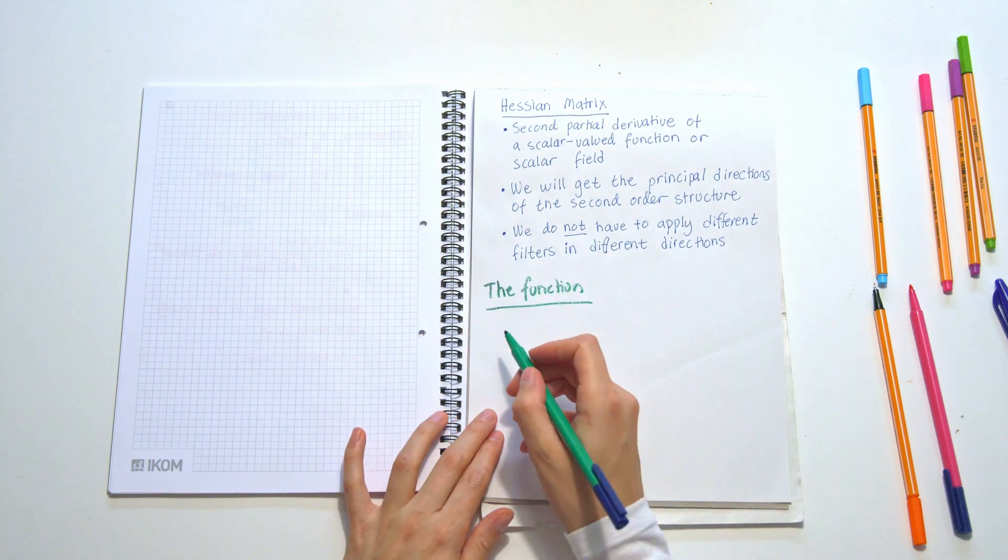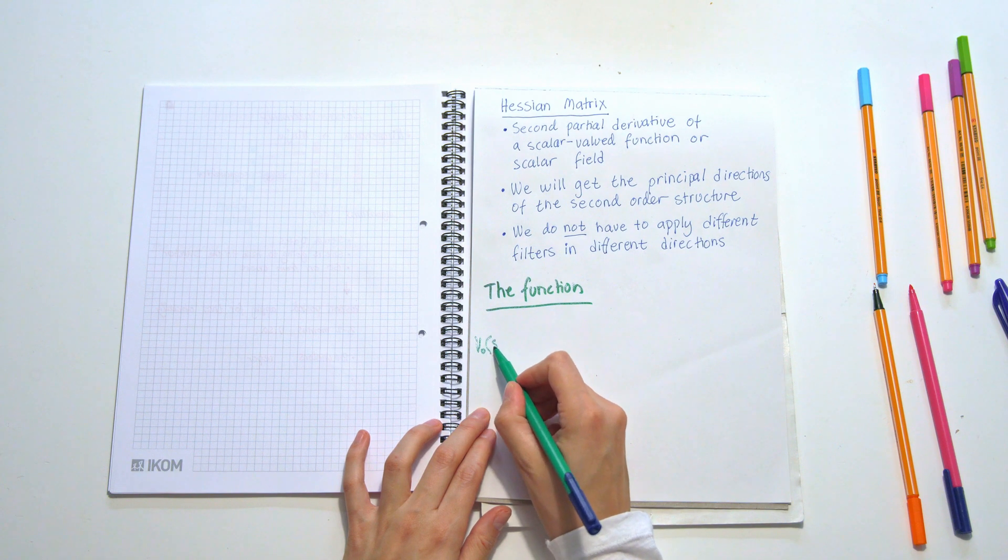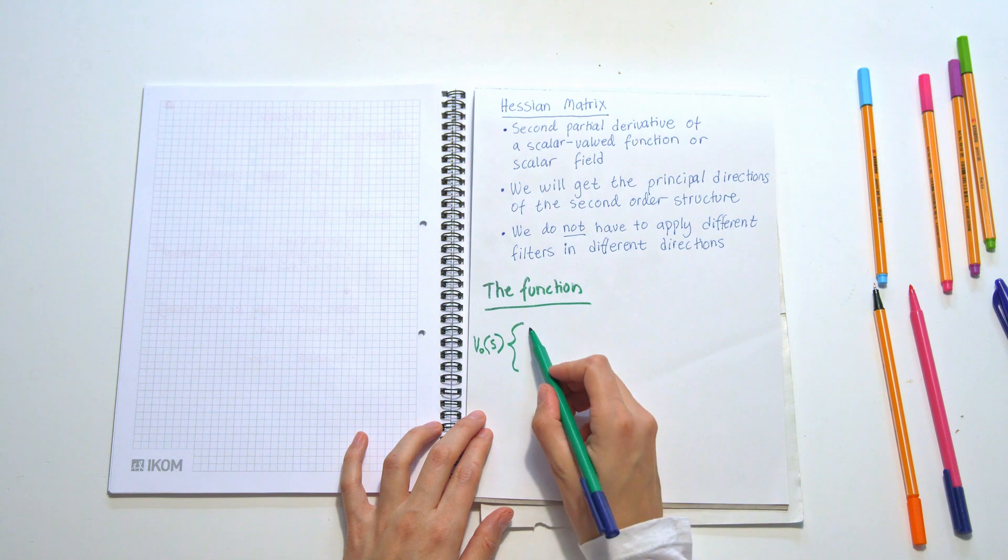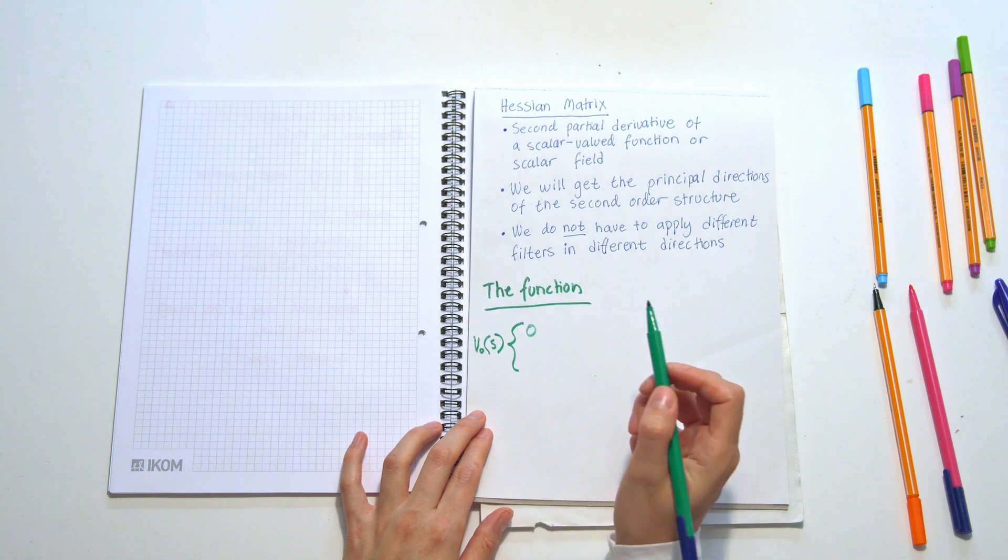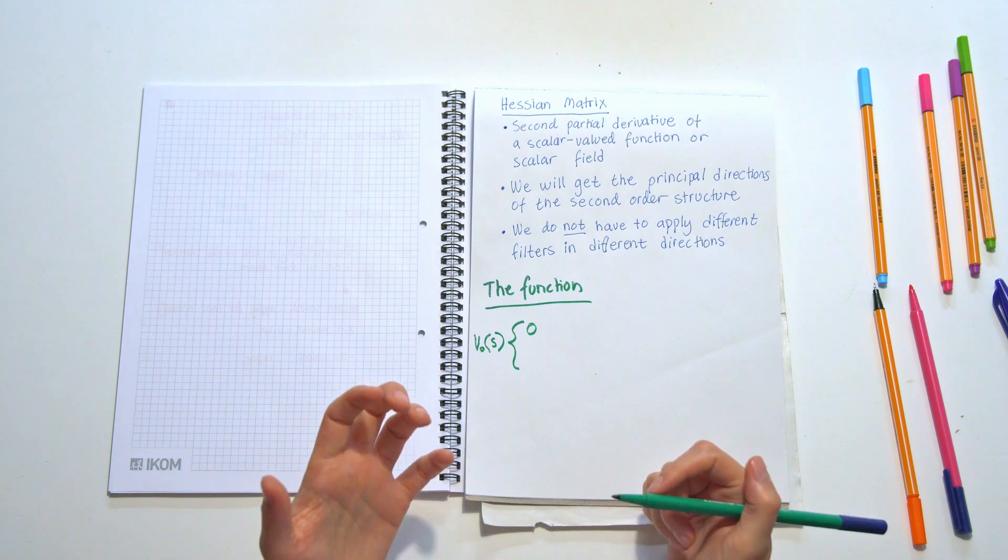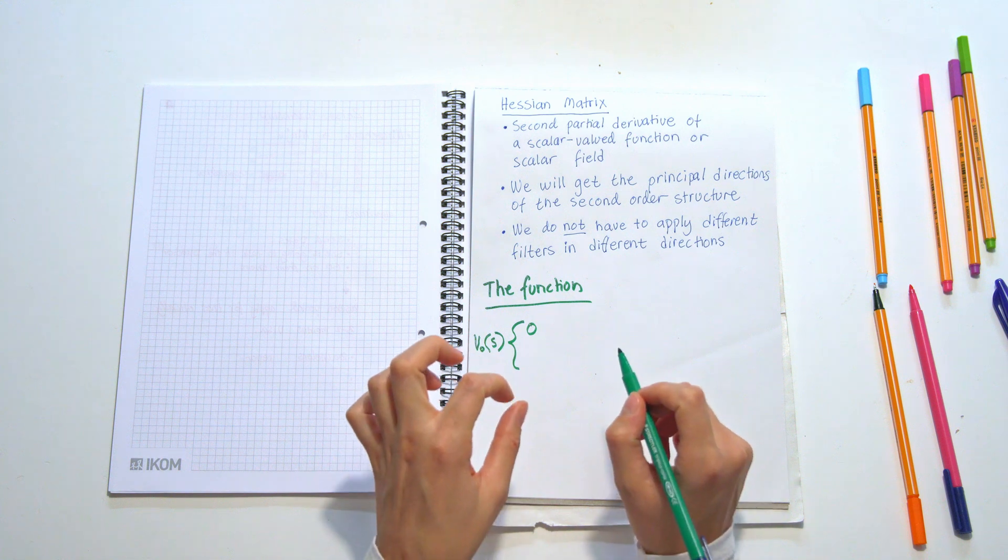Let's see the function that we are working with today. When we do not find a tubular structure, we're going to get back a zero. Otherwise we will get back a number that indicates how likely it is that this is a tubular structure that we have found in our image.